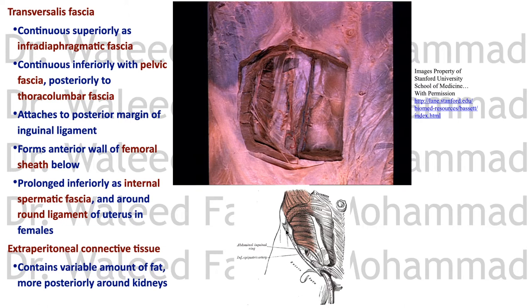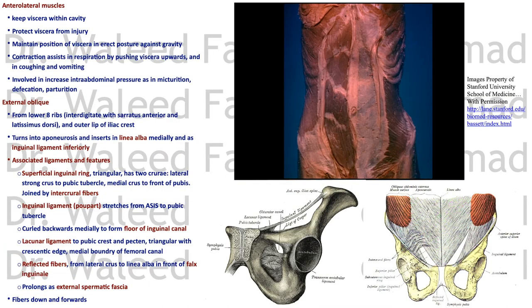After the transversalis fascia there is a thin variable layer of fat — especially condensed around the kidneys — which is the extra-peritoneal connective tissue, and then the peritoneum. This is the full thickness of the abdominal wall. The transversalis fascia is also apparent as the posterior wall of the inguinal canal near the deep ring.